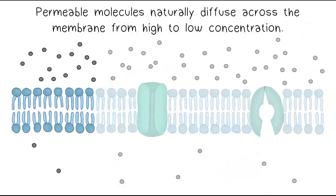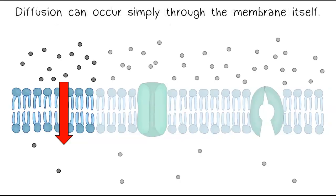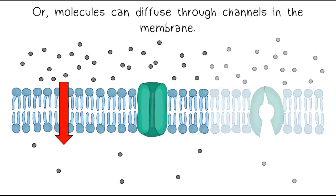Permeable molecules naturally diffuse across the membrane from high to low concentration. Diffusion can occur simply through the membrane itself or molecules can diffuse through channels in the membrane.